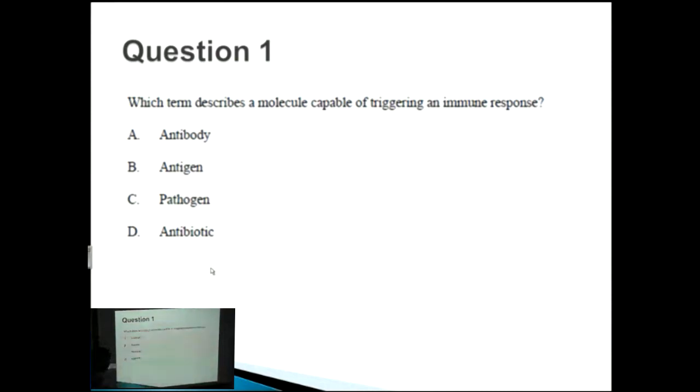So now we're talking about the immune system of the body and what different availabilities there are to combat if there's an infection. So our first question is which term describes a molecule capable of triggering an immune response? And this really comes down to knowing your definitions of these four basic terms here.